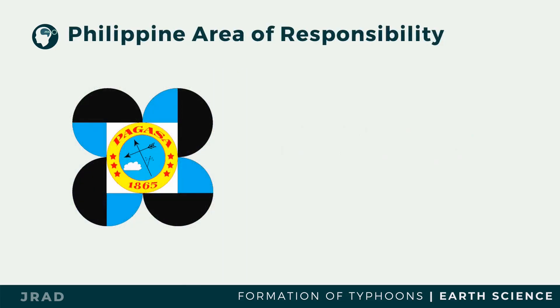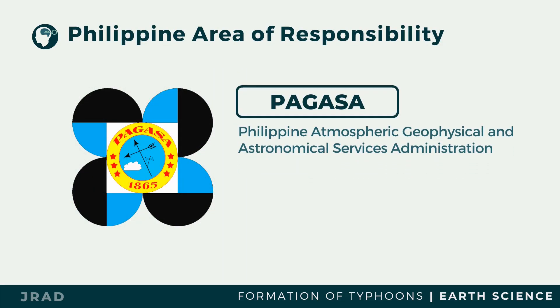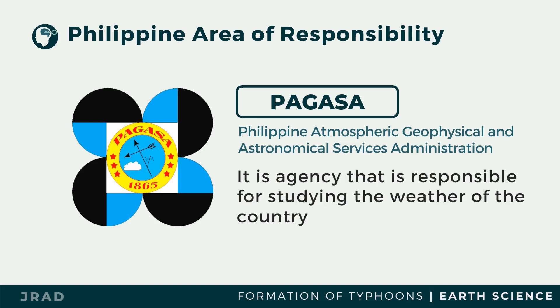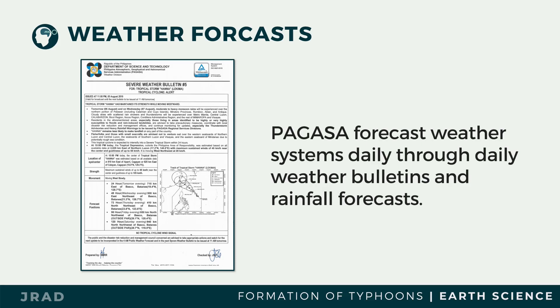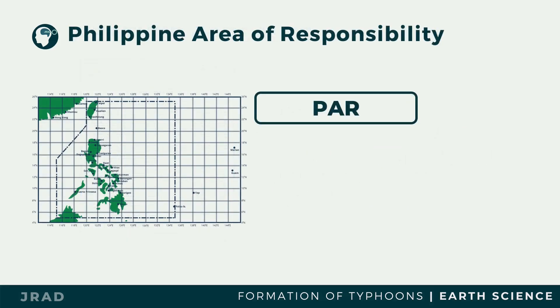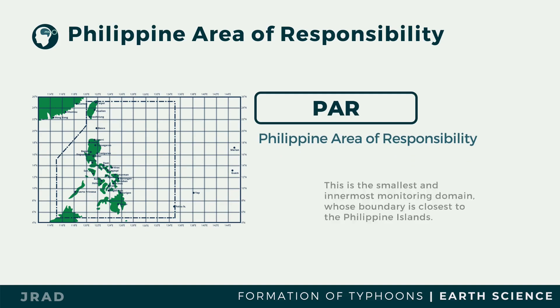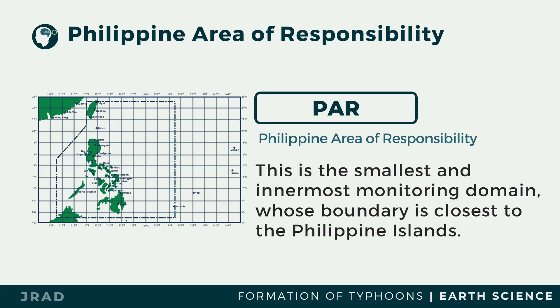The Philippine Atmospheric, Geophysical and Astronomical Services Administration, or PAGASA, is the agency responsible for studying the weather conditions of the country. PAGASA issues storm signals and warnings on areas affected or to be affected, and forecasts weather systems daily through weather bulletins and rainfall forecasts. The Philippine Area of Responsibility, or PAR, is the innermost monitoring domain closest to the Philippine Islands, monitored by PAGASA for any tropical cyclone that enters it to give advisories to Filipinos.